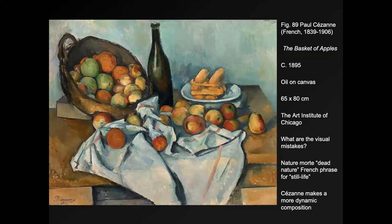Cézanne thought of himself as a student and started doing still lives, but he wanted to do them in a new way to change how he painted. So Cézanne tries to make a more dynamic composition. Look at this picture — you can pause it — and try to find the visual mistakes, things that don't seem to match up or seem strange about this particular still life.